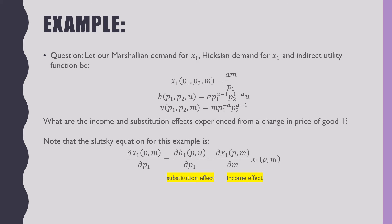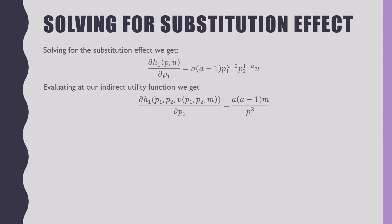We can use our Slutsky equation for this, which states that the change in Marshallian demand from a change in price is composed of a substitution effect and income effect. Solving for the substitution effect, we take the partial derivative of our Hicksian demand for good x1 with respect to the price of good x1. We take this derivative and evaluate it at the indirect utility function, putting the indirect utility function in the place where it should be.